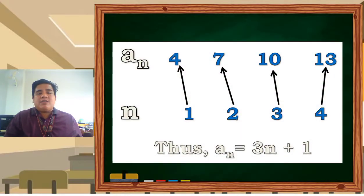Look at this: a sub n. When we say a sub n, those are the elements or the terms in a sequence. n is the number of terms or the position of the term. Thus, a sub n equals 3n plus 1. That's the rule for our sequence: 4, 7, 10, 13. We have a common difference of 3.